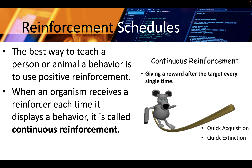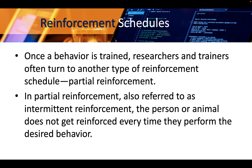The best way to teach a person or animal a behavior is to use positive reinforcement. When an organism receives a reinforcer each time it displays a behavior, it is called continuous reinforcement. Once a behavior is trained, researchers and trainers often turn to another type of reinforcement schedule: partial reinforcement, also referred to as intermittent reinforcement, where the person or animal does not get reinforced every time they perform the desired behavior.